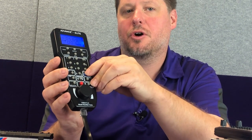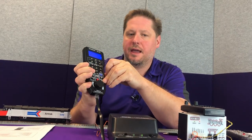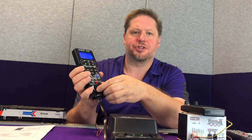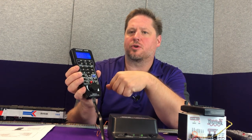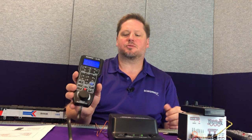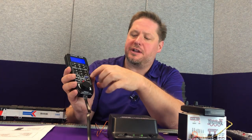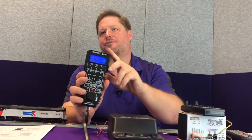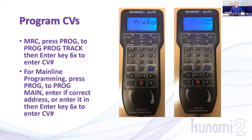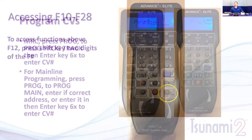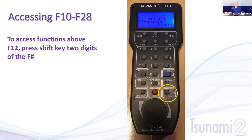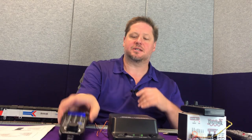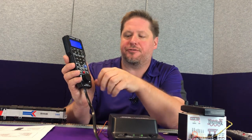With locomotive 589 selected, we can blow the horn, ring the bell, turn on the headlight, and start to move the locomotive forward using the throttle or thumb wheel. We've accessed F2, F3, and F4, but notice we only have 10 keys — zero through nine. So how do we access the higher functions?